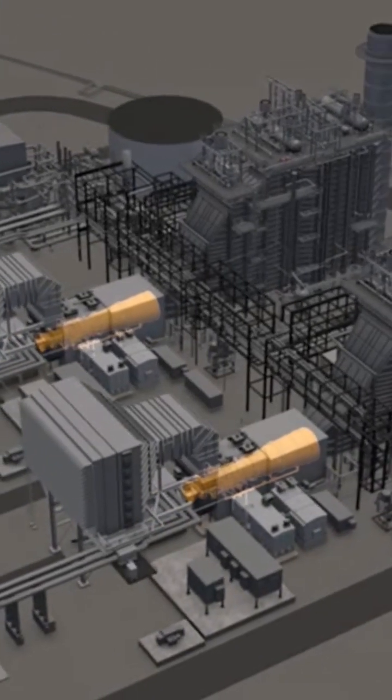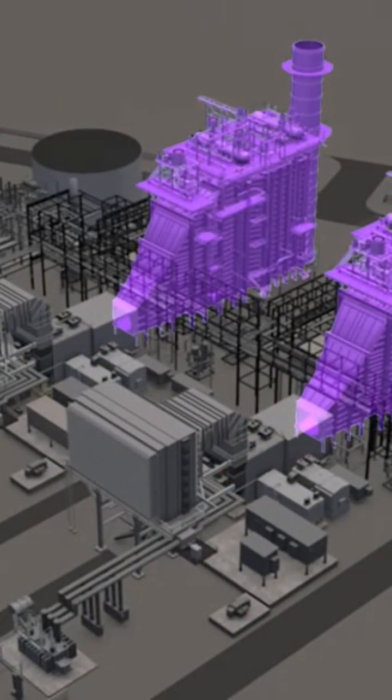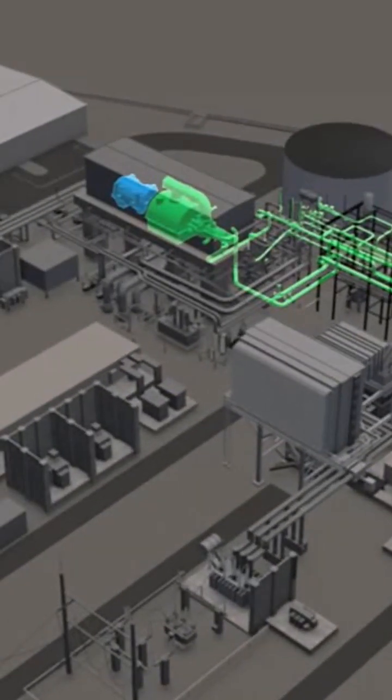The waste heat from the GT is used to create steam in the heat recovery steam generator. The steam is then used to rotate the steam turbine.